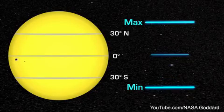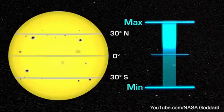At solar minimum, there are sometimes no sunspots to observe. At solar maximum, there can be many at the same time.